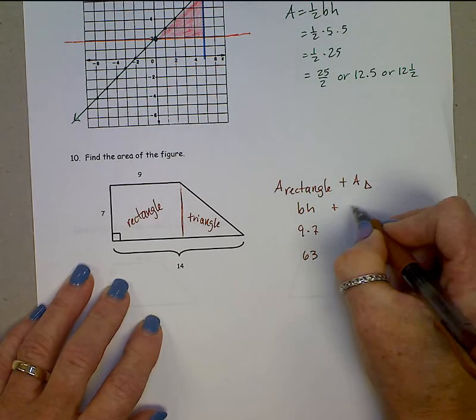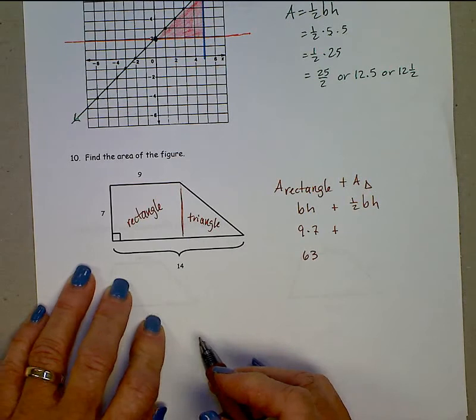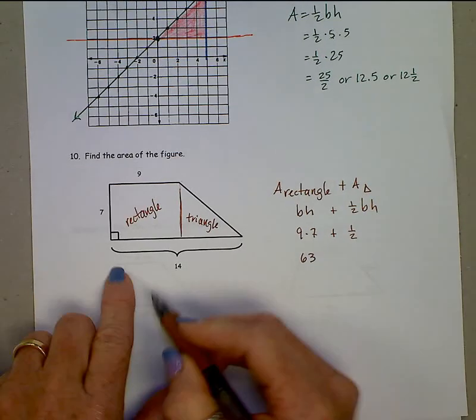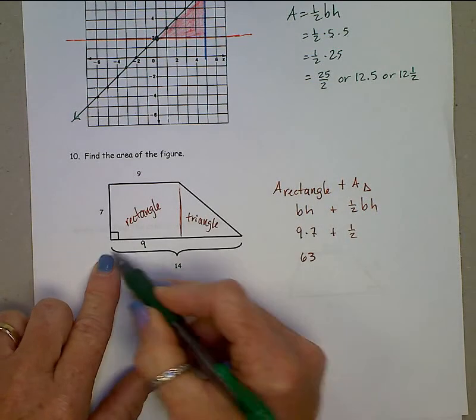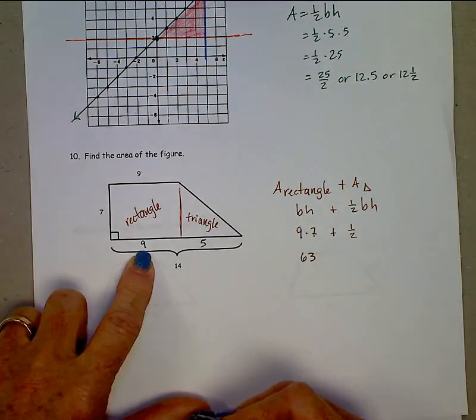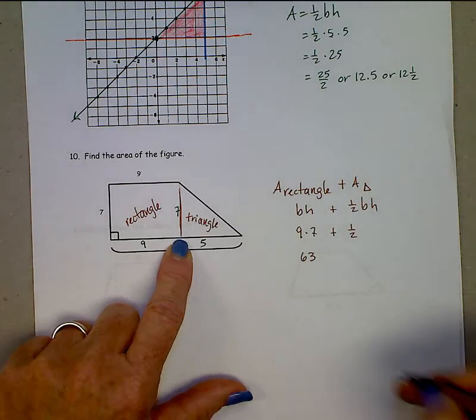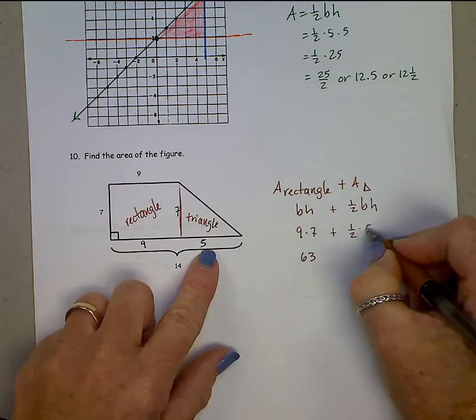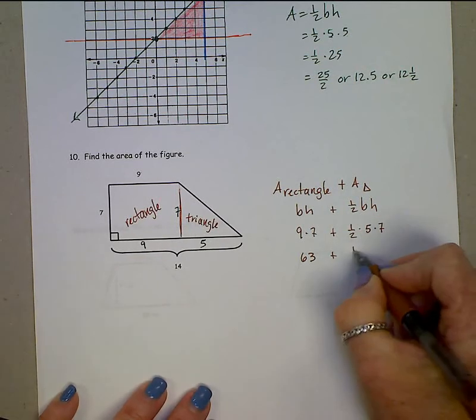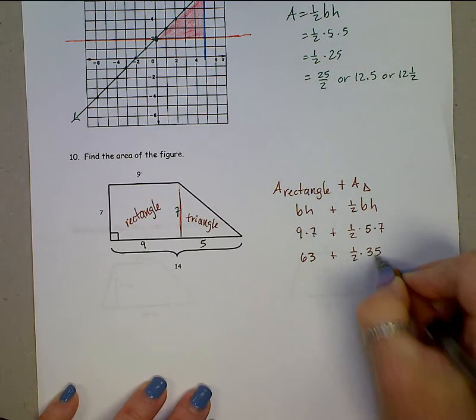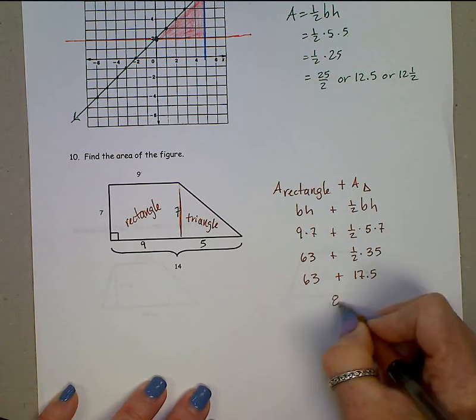Area of a triangle, 1 half base times height. So let's look over here. Looking, oh, that 9 there, that 9 can come down. And then this whole piece is 14 minus that 9 makes this a 5. And there's 7 for that height. 1 half base, 5 times height for this triangle, 7. 35 first, so 1 half times 35, and that's 17 and a half. And when we add these together, we'll get 80 and a half.